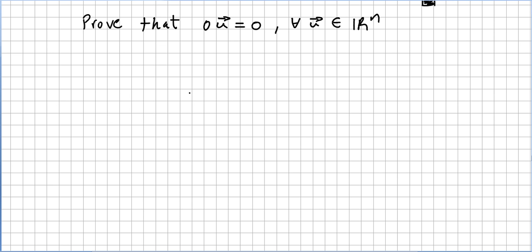Now we are asked to prove that 0 times vector u equals the zero vector, for all vectors in this vector space. Let us do what I'm going to call proof 1, because sometimes we can prove a theorem or proposition in several ways. There are even some theorems that are over-proved — for example, the Pythagorean theorem has hundreds of proofs.